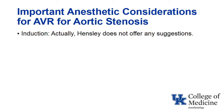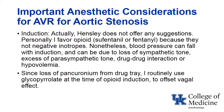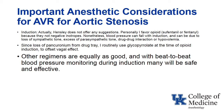When it comes to induction, there are no particular recommendations in the textbook. I favor opioid induction because sufentanyl and fentanyl are not negative inotropes. However, blood pressure can fall with induction and may require treatment of loss of sympathetic tone or excessive parasympathetic tone. Classically, pancuronium was paired with fentanyl, but now that pancuronium is no longer available, I use glycopyrrolate at the time of opioid induction to offset vagal tone. Other regimens could be equally good, and with beat-to-beat blood pressure monitoring during induction, many anesthetic choices will be safe enough.